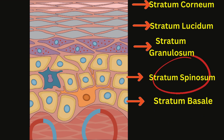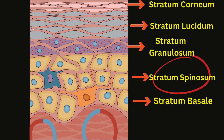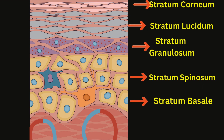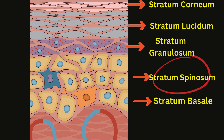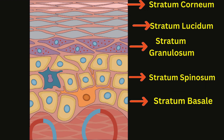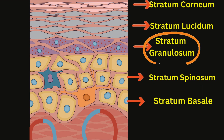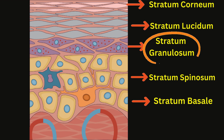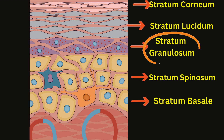Stratum spinosum: consists of several layers of keratinocytes (epidermal cells), which become flattened as they move toward the surface. Stratum granulosum: contains flattened keratinocytes with granules that contain lipids and keratin precursors.